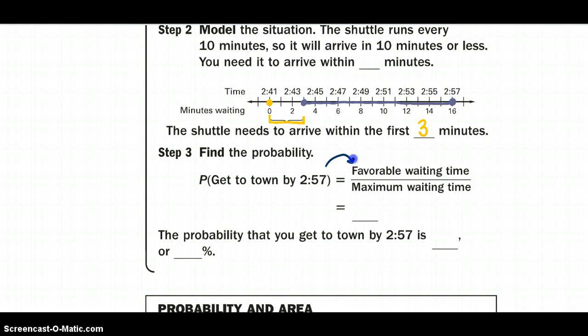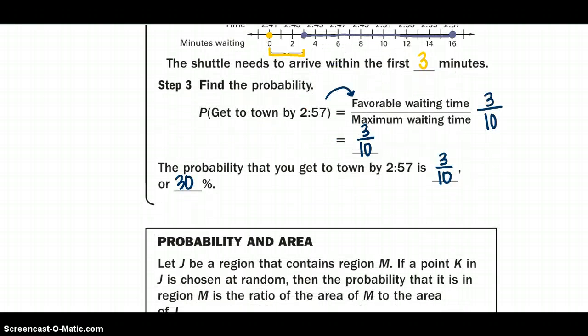So our favorable wait time, how long can I wait for this shuttle to get there? And we found out that was only three minutes. And since the shuttle runs every 10 minutes, that's going to be our max time. So our ratio of this situation is 3 to 10. So the probability that we will get down there by 2:57 is really only 30%. Not a very good chance.